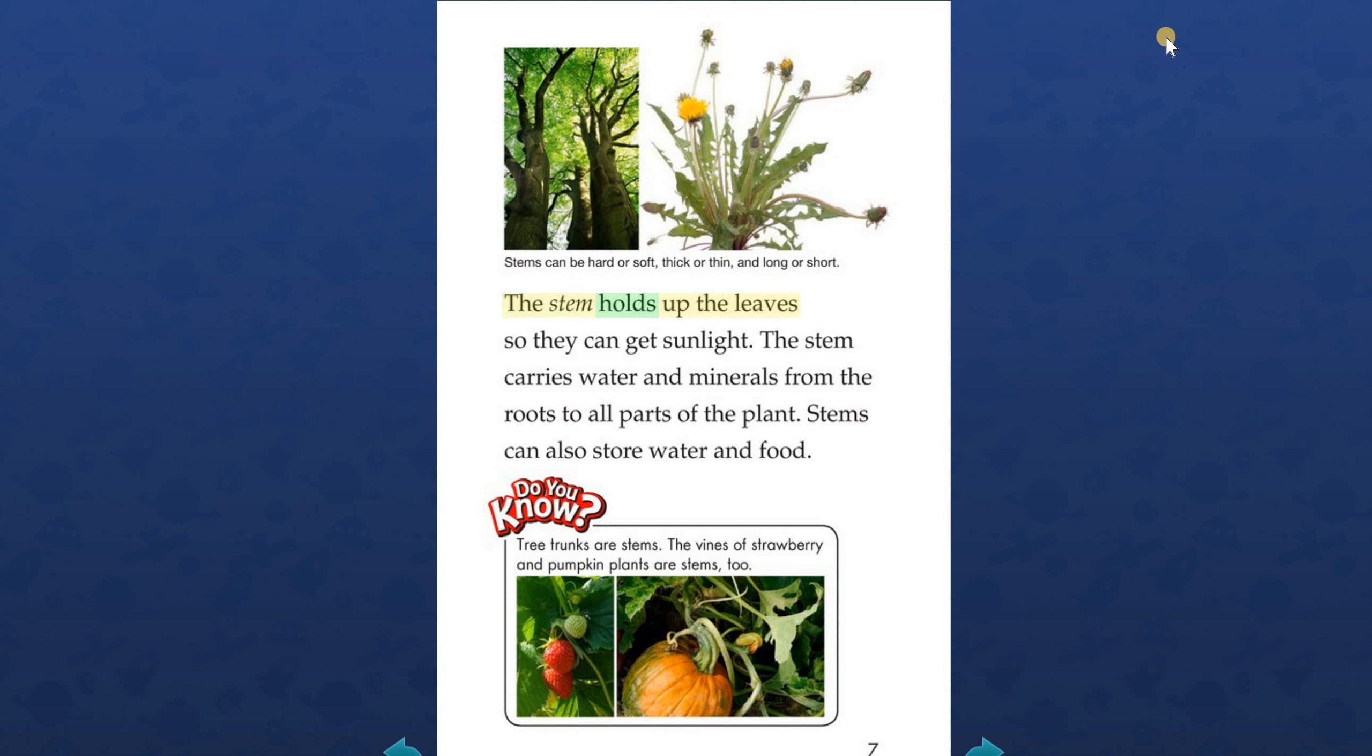The stem holds up the leaves so they can get sunlight. The stem carries water and minerals from the roots to all parts of the plant. Stems can also store water and food. Do you know? Tree trunks are stems. The vines of strawberry and pumpkin plants are stems too.